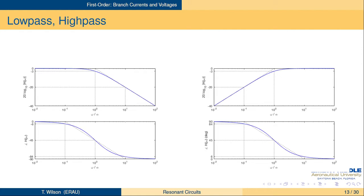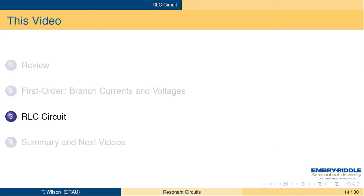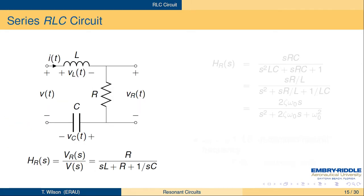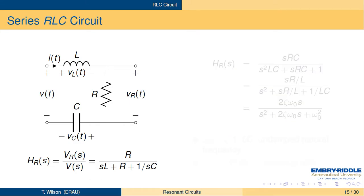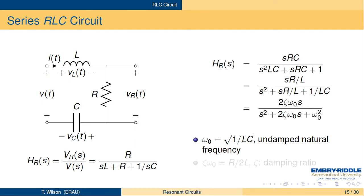Now for the series RLC circuit: looking at the output across the resistor, the transfer function is H_R(s) = R / (sL + R + 1/sC). After simplification, this becomes s·(R/L) / (s² + s·(R/L) + 1/LC). This is the standard form we've used before for the second-order system.